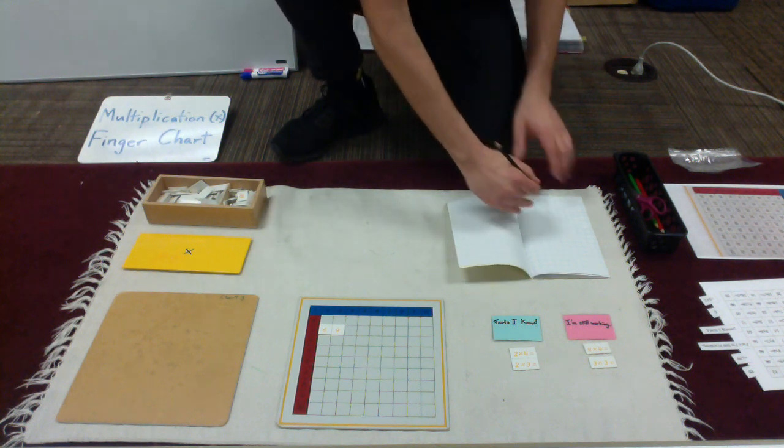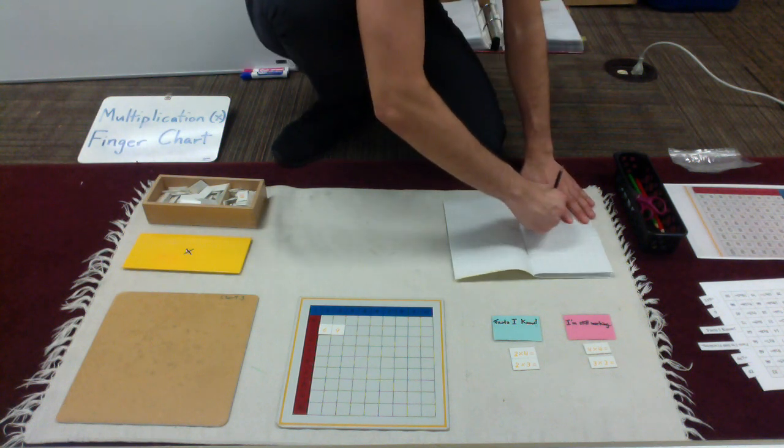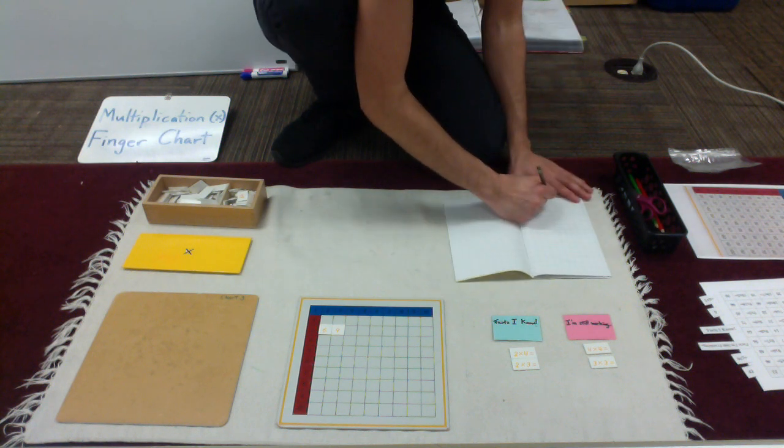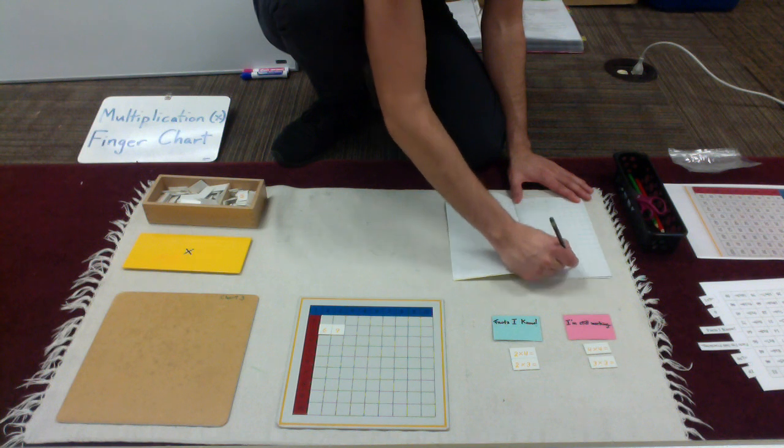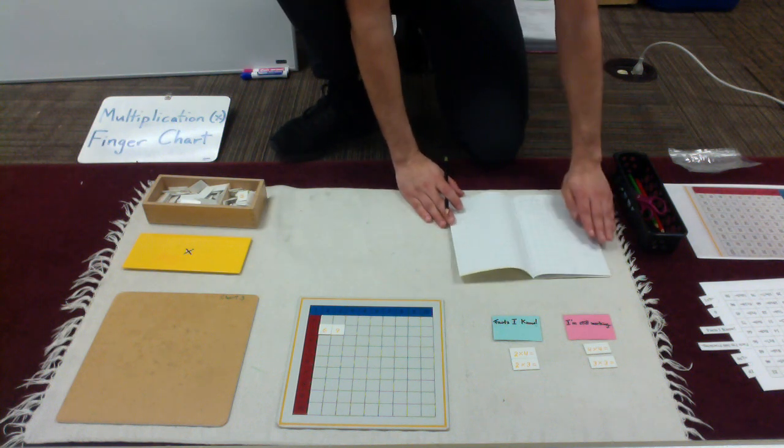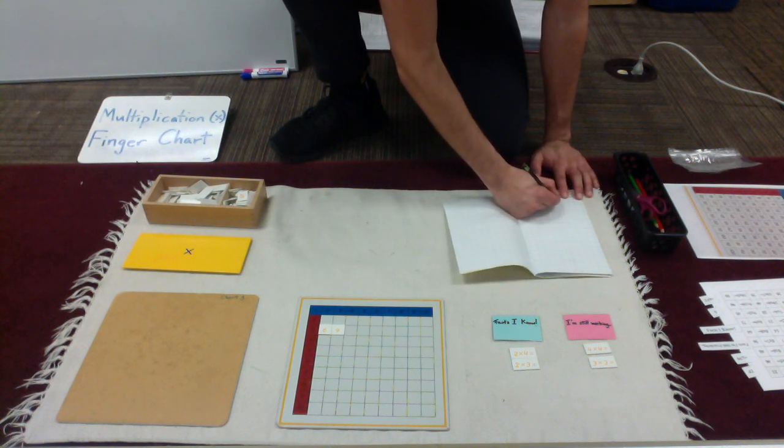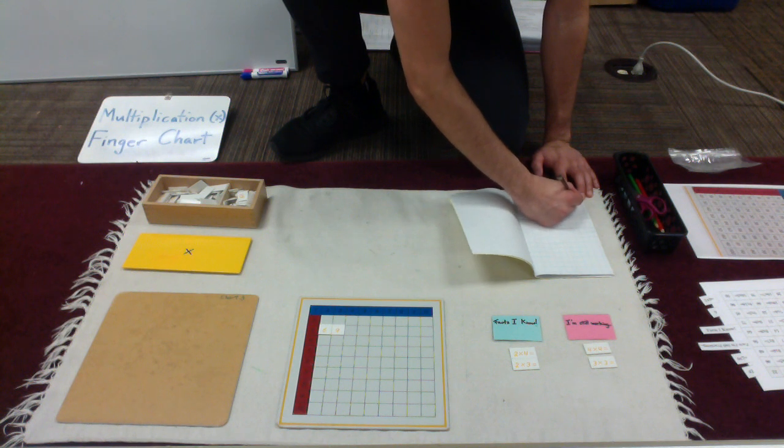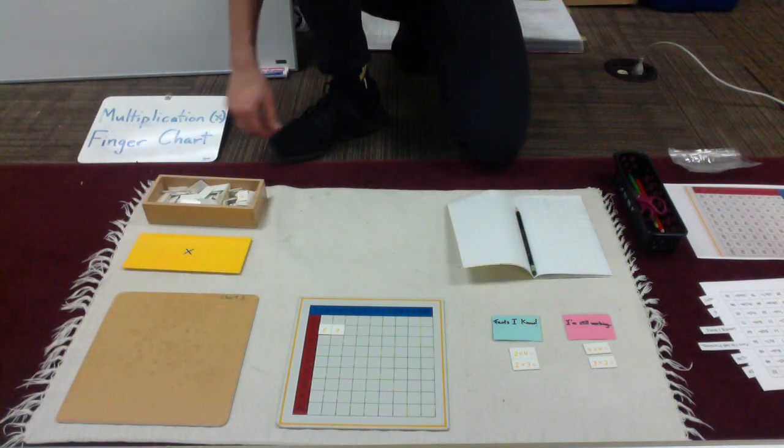Now, since that was a fact I'm still learning, actually, instead of putting it in the same column as the ones I know, I'm going to draw a line down the middle of my page. And I'll have facts that I know and I'll have facts that I'm still practicing. So since 3 times 3 was one I went to the control chart for, I'm going to put it over here on the I'm still learning side.